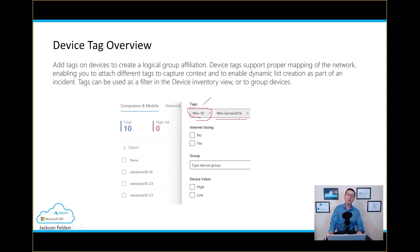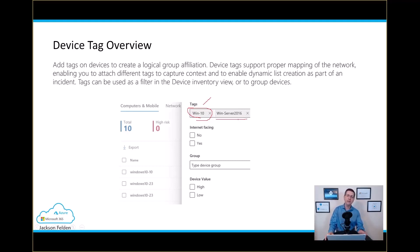Some configurations — for example, the IOCs or indicators of compromise — if I'm using them to block URLs, IP addresses, or files, I can target only Windows 10 or whatever tag you have created.